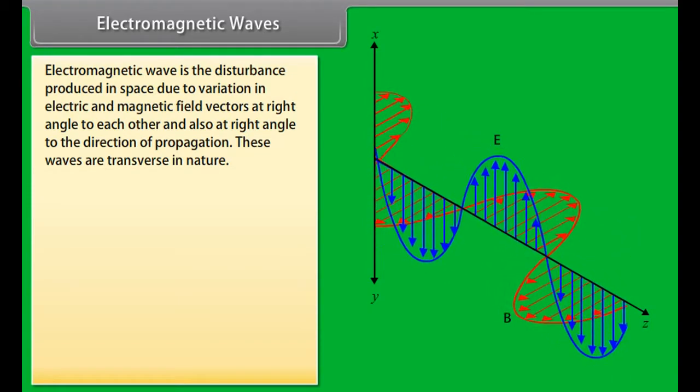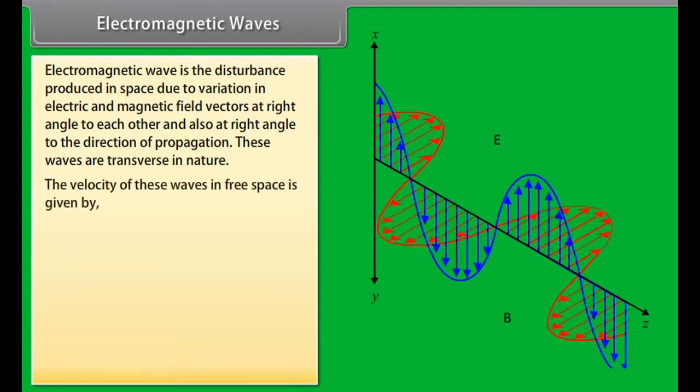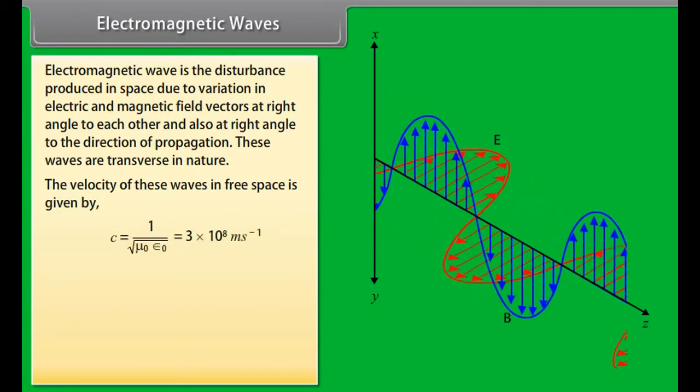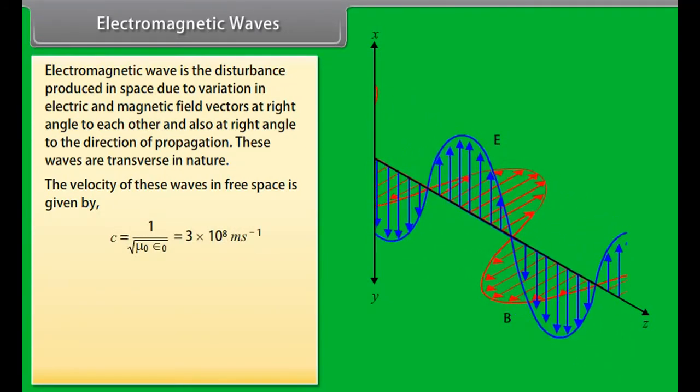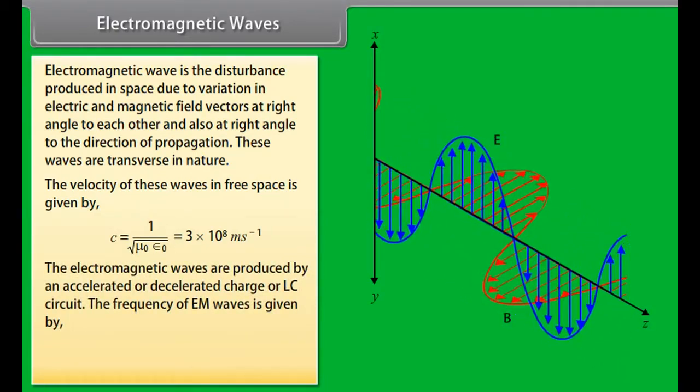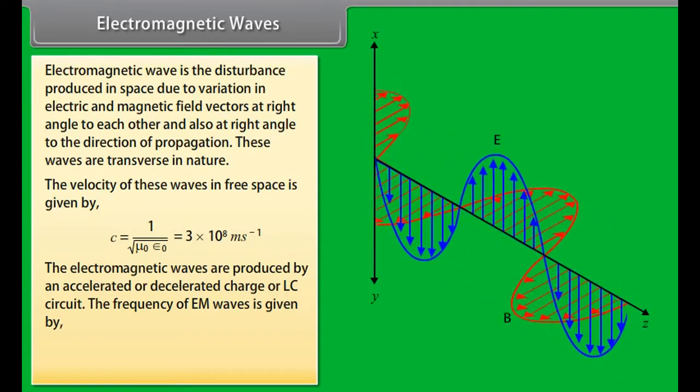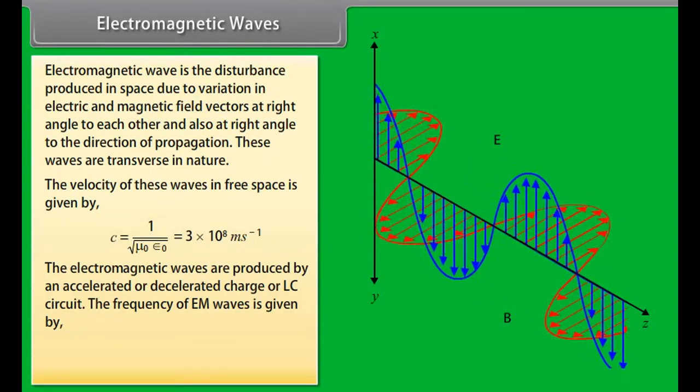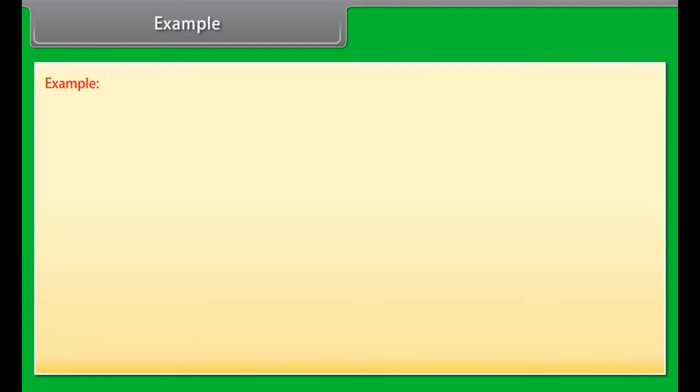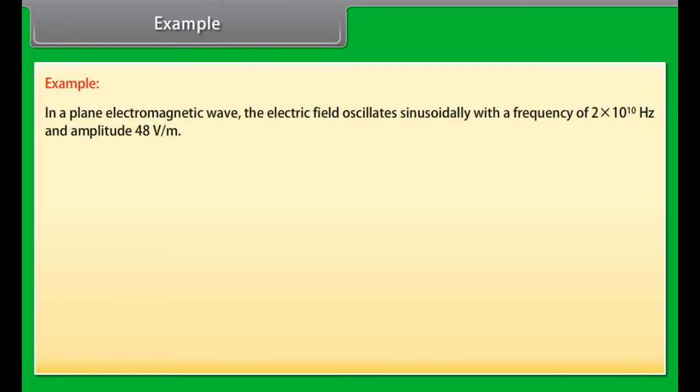Electromagnetic waves. Electromagnetic wave is the disturbance produced in space due to variation in electric and magnetic field vectors at right angle to each other and also at right angle to the direction of propagation. These waves are transverse in nature. The velocity of these waves in free space is equal to the velocity of light, which is equal to 3 into 10 raised to the power 8 meter per second. The electromagnetic waves are produced by an accelerated or decelerated charge of LC circuit. The frequency of EM waves is given by 1 upon 2 pi under root LC.